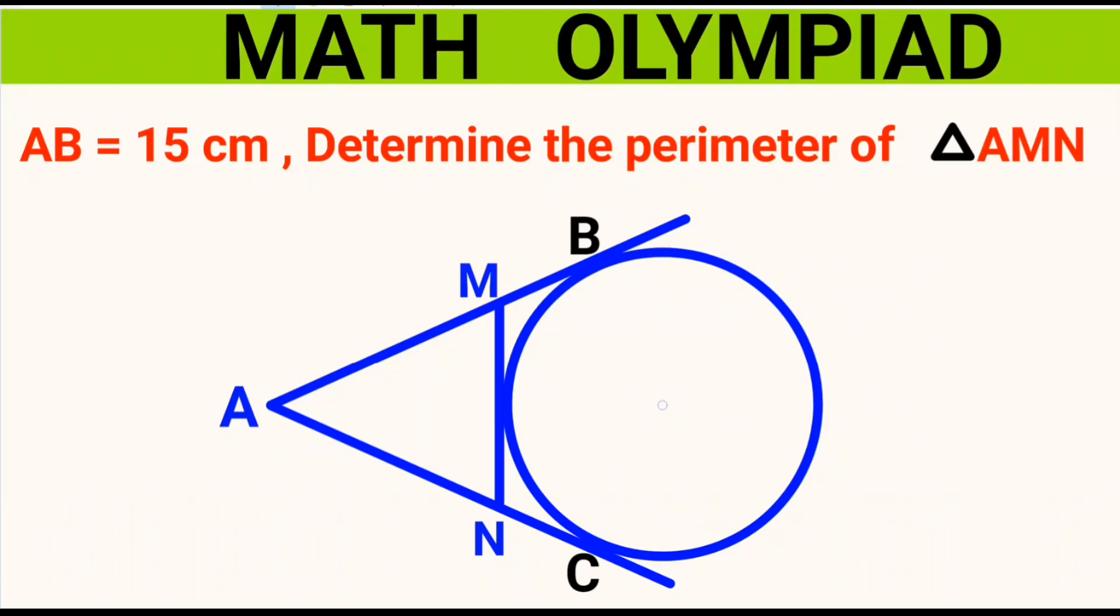In this video, we have lines AB and AC drawn from the same common point A, and they are tangent to the circle at B and C respectively. Line MN is drawn such that it is tangent to the circle. We are given that AB is equal to 15 centimeters, and we are to determine the perimeter of triangle AMN.